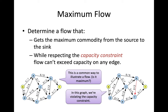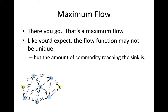Over here on the right, I'm showing an example that violates the capacity constraint. There's a red edge going from B to F where we're using 3 out of the available 2 units of capacity — that's cheating. That violates the capacity constraint. So a flow specifies for every edge how much of the available capacity you're using, and the capacity constraint says you can't push more than the available capacity.